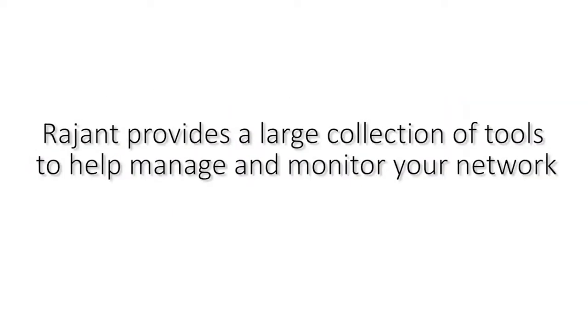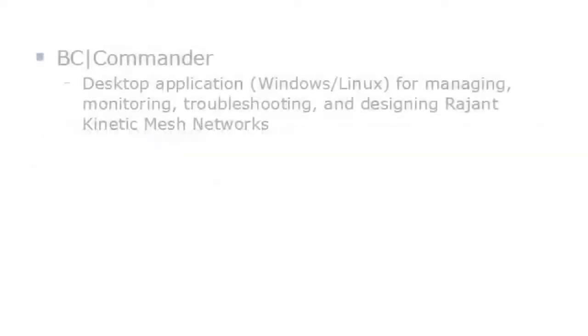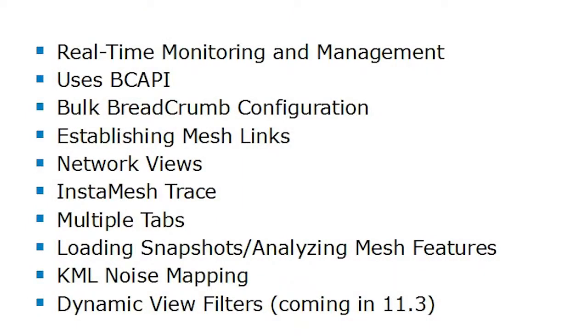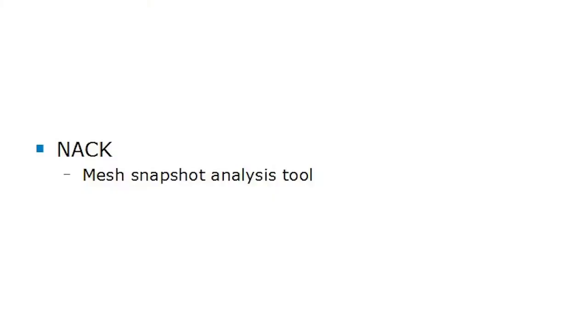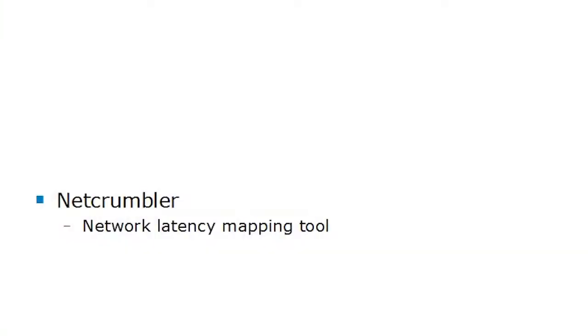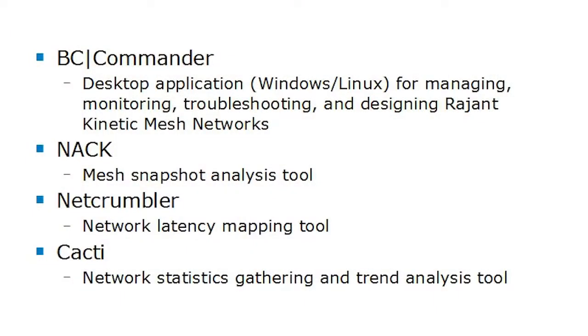Rajant provides all the software tools needed to sustain your network. BC Commander is a desktop application that runs on Windows or Linux, and is used to manage, monitor, troubleshoot, and design Rajant kinetic mesh networks. It's capable of taking a diagnostic snapshot of the network, which can be processed by another tool we provide called NAC. NAC can be used to look at the big picture of your network, compare configurations, look for noise issues, things like that. NetCrumbler is a network latency mapping tool that correlates ping results to GPS coordinates. Cacti is an open source tool that we've customized to provide network statistics gathering and historical trend analysis of network statistics.